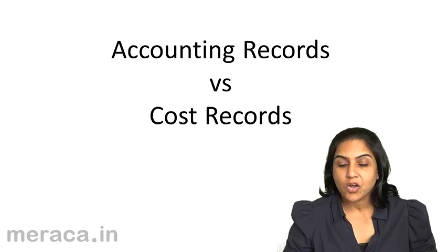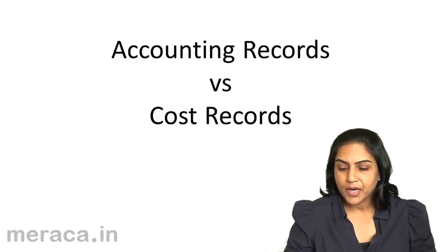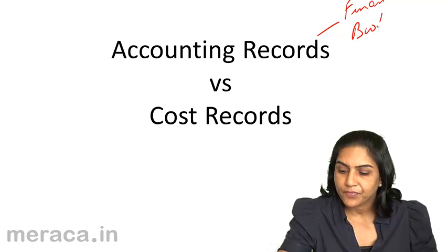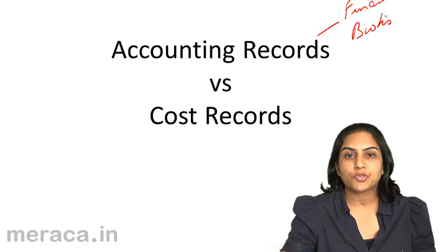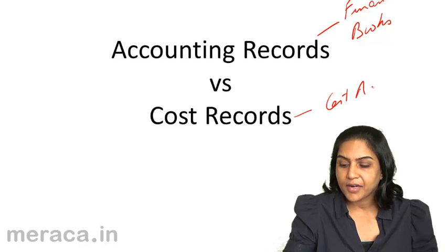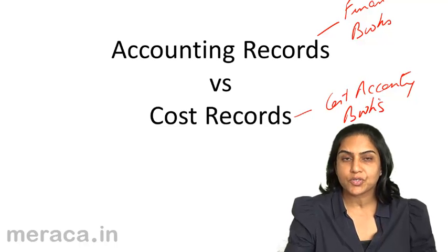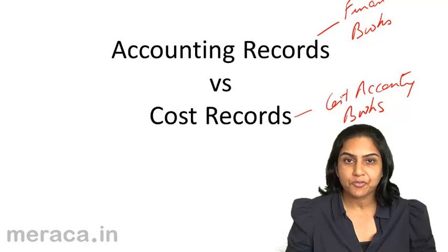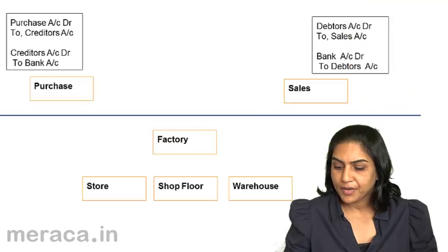Accounting records versus cost records: accounting records are the records maintained in the financial books — this is what most of us are familiar with. But cost records are maintained under cost accounting books. We could have a separate set of books, one for financial and one for costing. Let us roughly understand what the difference is and whether they overlap.